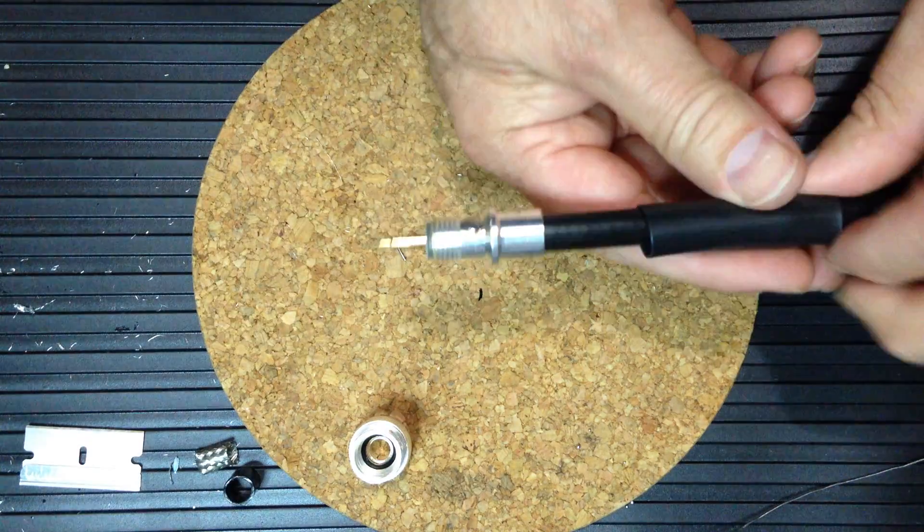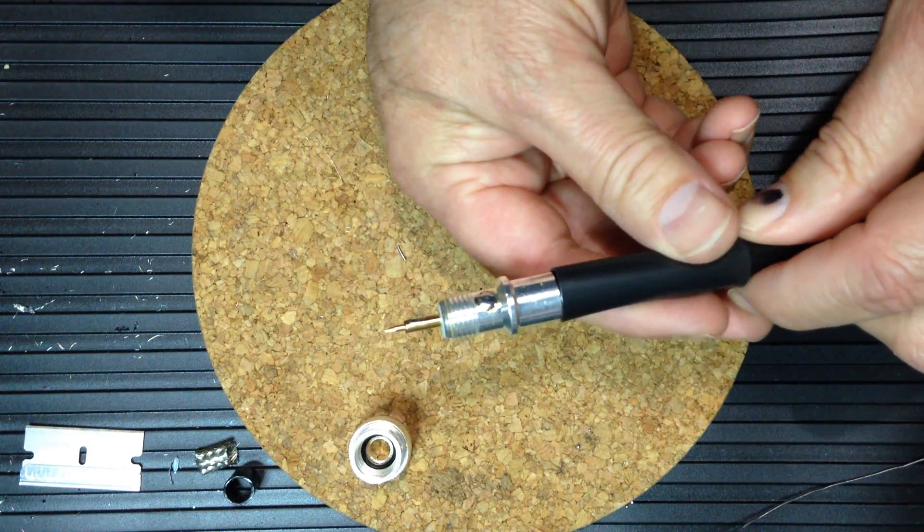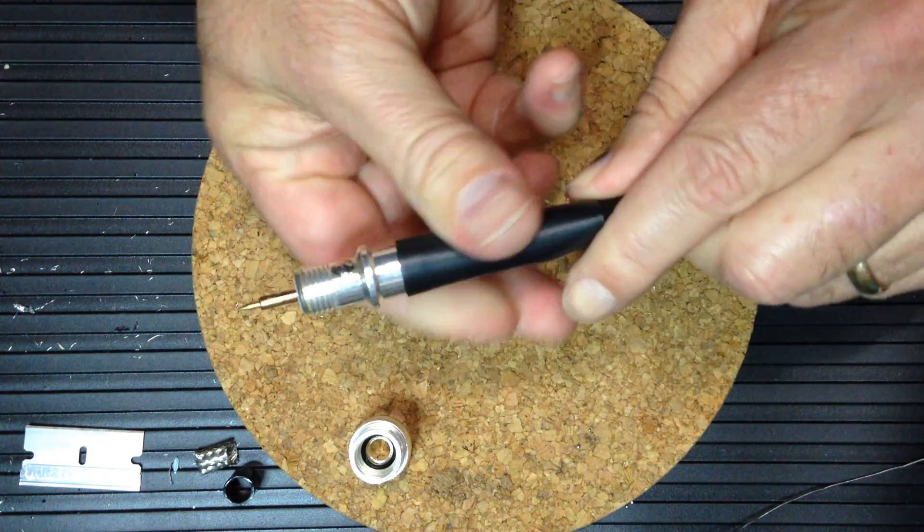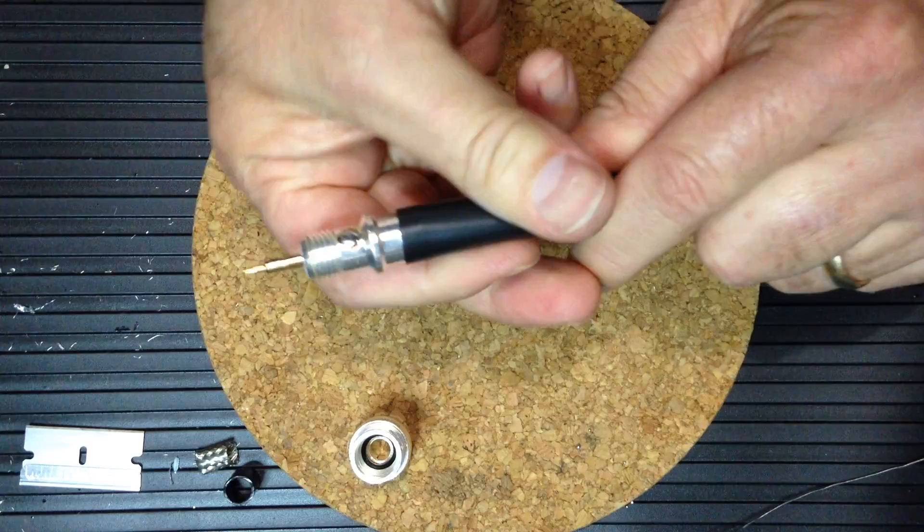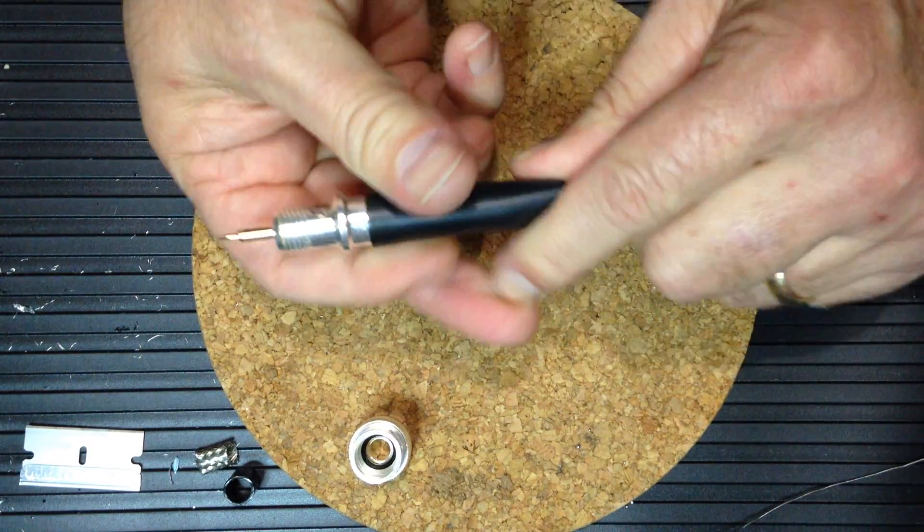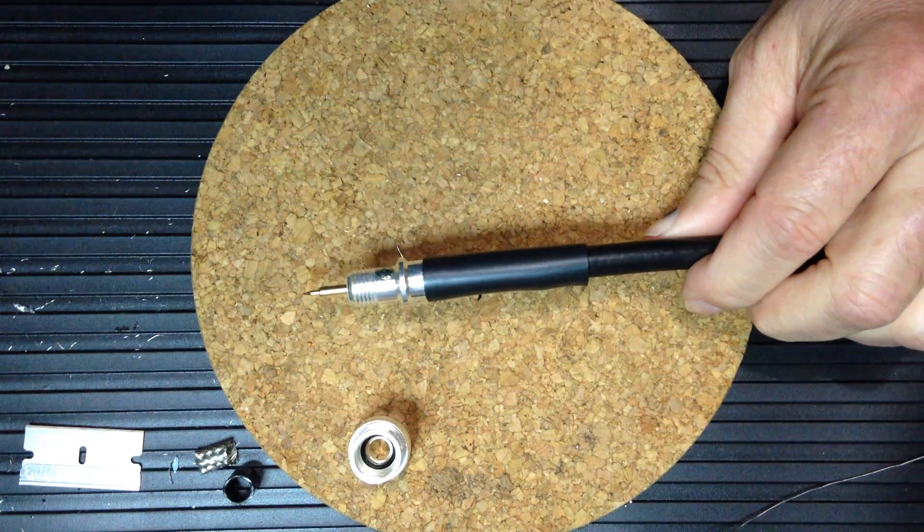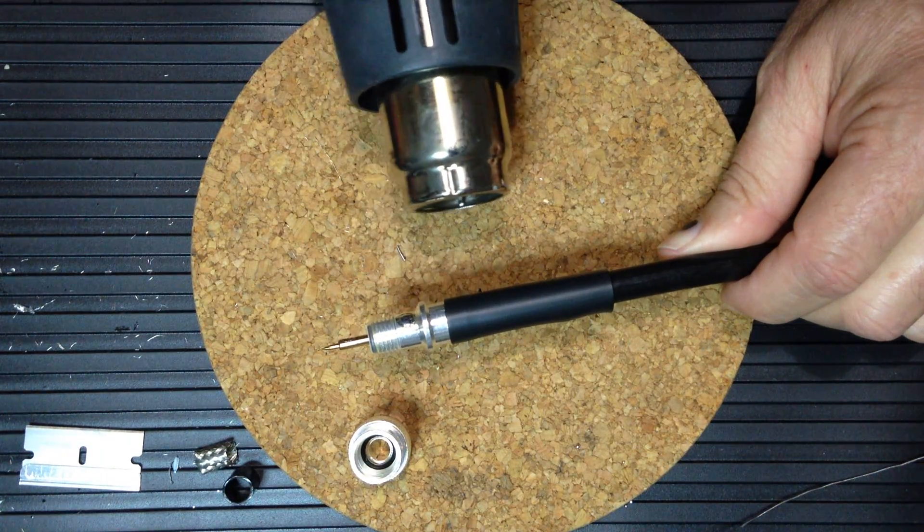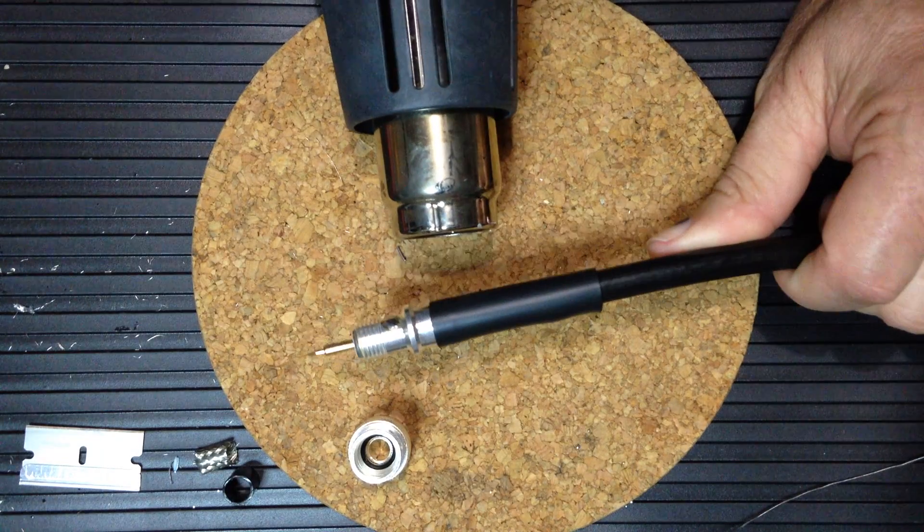The next step is to slide your heat shrink tubing onto the connector. The connector is still a bit hot, so it will tend to shrink on that body immediately, and we'll use a heat shrink gun or a hot air gun to finish heat shrinking tubing.